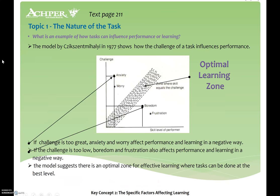Here we see the model of the optimal learning zone. If the challenge is too great, anxiety and worry about performance affect learning negatively. If the challenge is too low, boredom and frustration also affect performance — we become lethargic. There's an optimal zone: a mixture of challenge, but not too challenging.